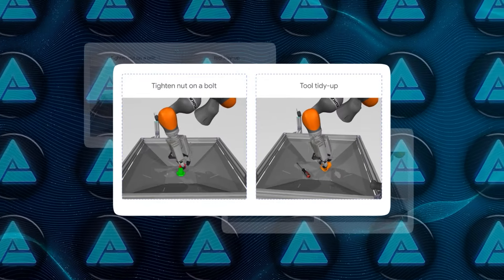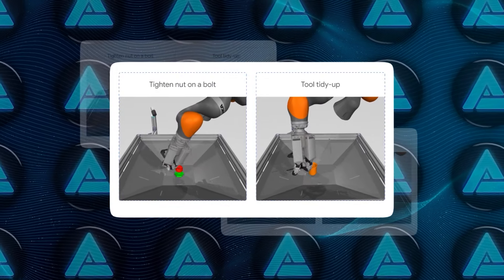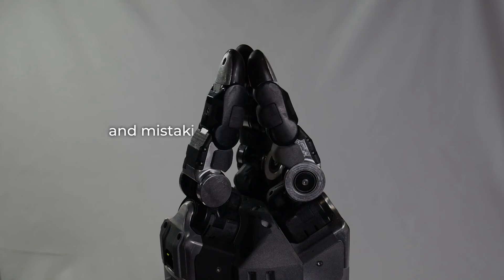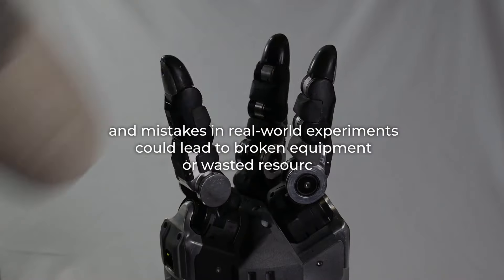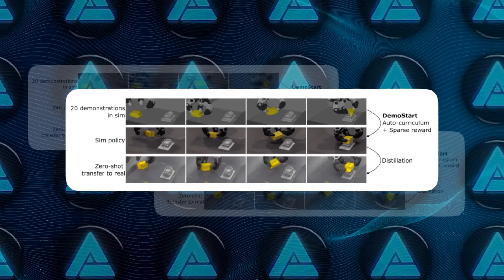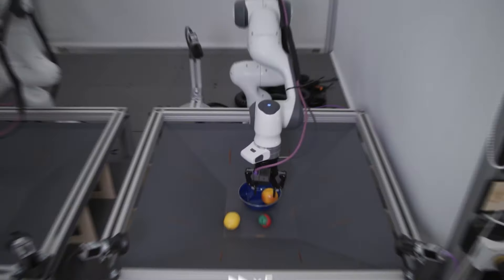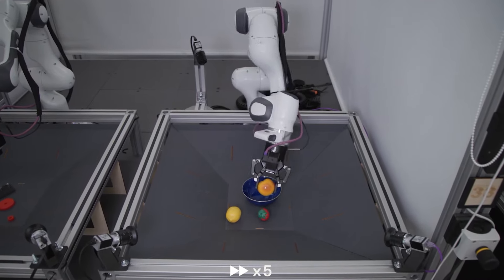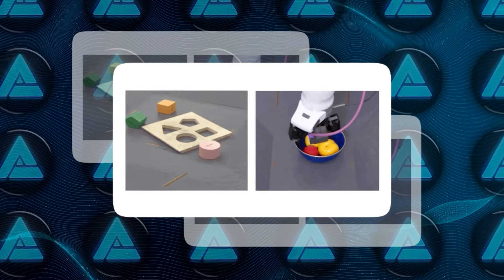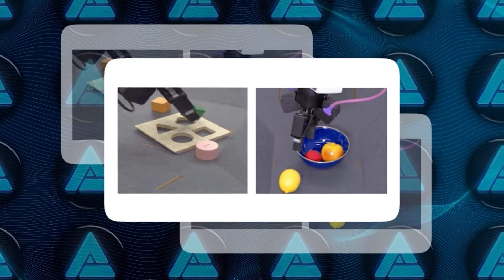Training these multi-fingered systems in the real world would be incredibly slow and expensive. Each finger joint needs to move with perfect timing and precision, and mistakes in real-world experiments could lead to broken equipment or wasted resources. Instead, Demostart trains robots in highly detailed simulations, allowing them to practice thousands of times in a fraction of the time it would take in the physical world. Once the robot has learned the task in simulation, its skills can be transferred to real-world applications with impressive results.